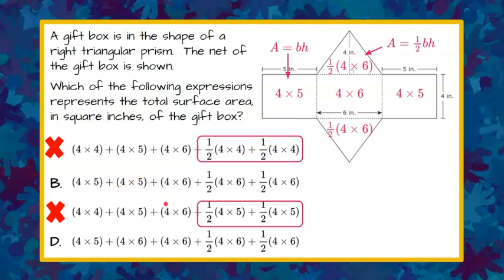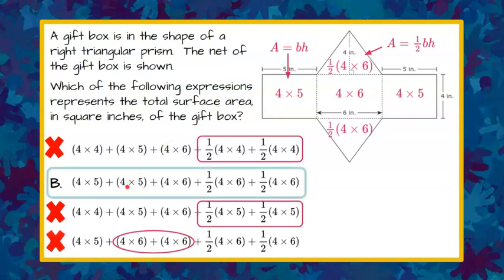It looks like B, but let's check D. Answer D has one four-by-five rectangle and two four-by-sixes, but clearly these two rectangles are four by five — so I'm verifying everything. I know it cannot be D because of that, and our answer choice is B: five faces and all five areas.